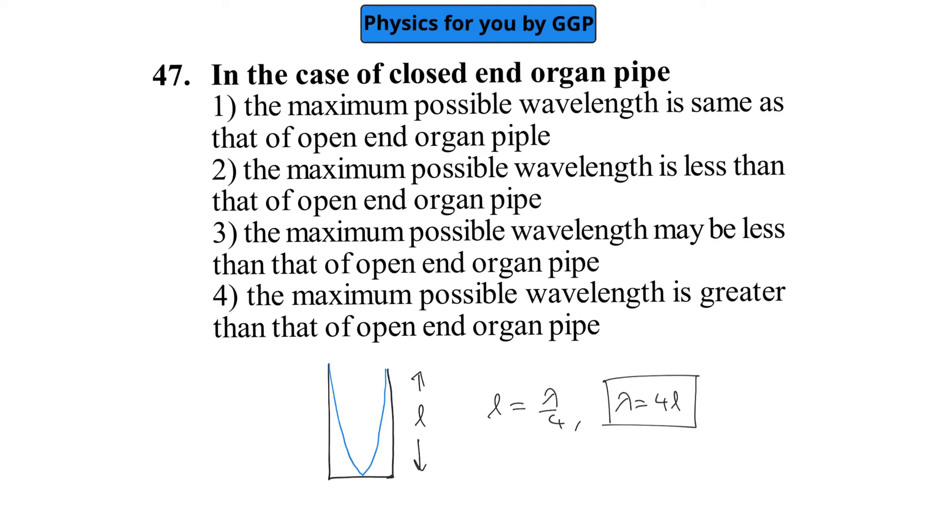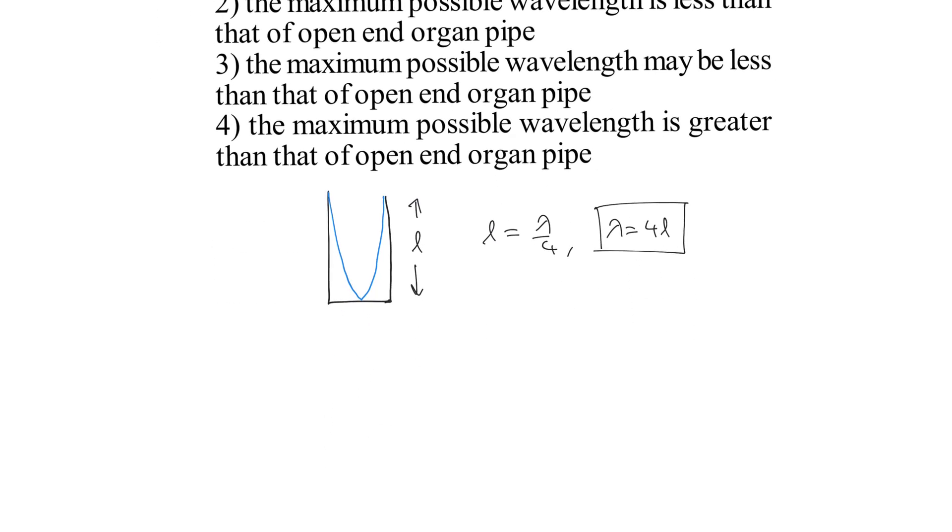An option is given that the maximum possible wavelength is same as that of open end organ pipe. Now we know that in case of open end organ pipe, both the ends are open and if you are representing its fundamental mode of oscillation.